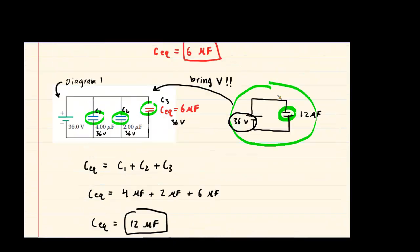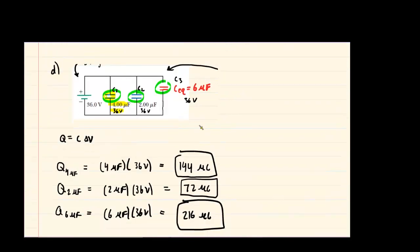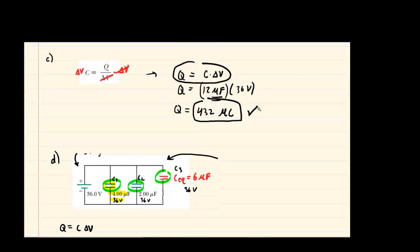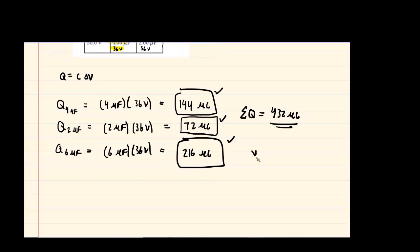There is also a follow-up for part D: does the sum of the charges agree with the value found in part C? The sum — sigma Q — requires adding all three together: 144 + 72 + 216 = 432 microcoulombs. That agrees with our answer from part C, where the total charge on the single capacitor was 432 microcoulombs. So the answer to the follow-up is yes, they agree.